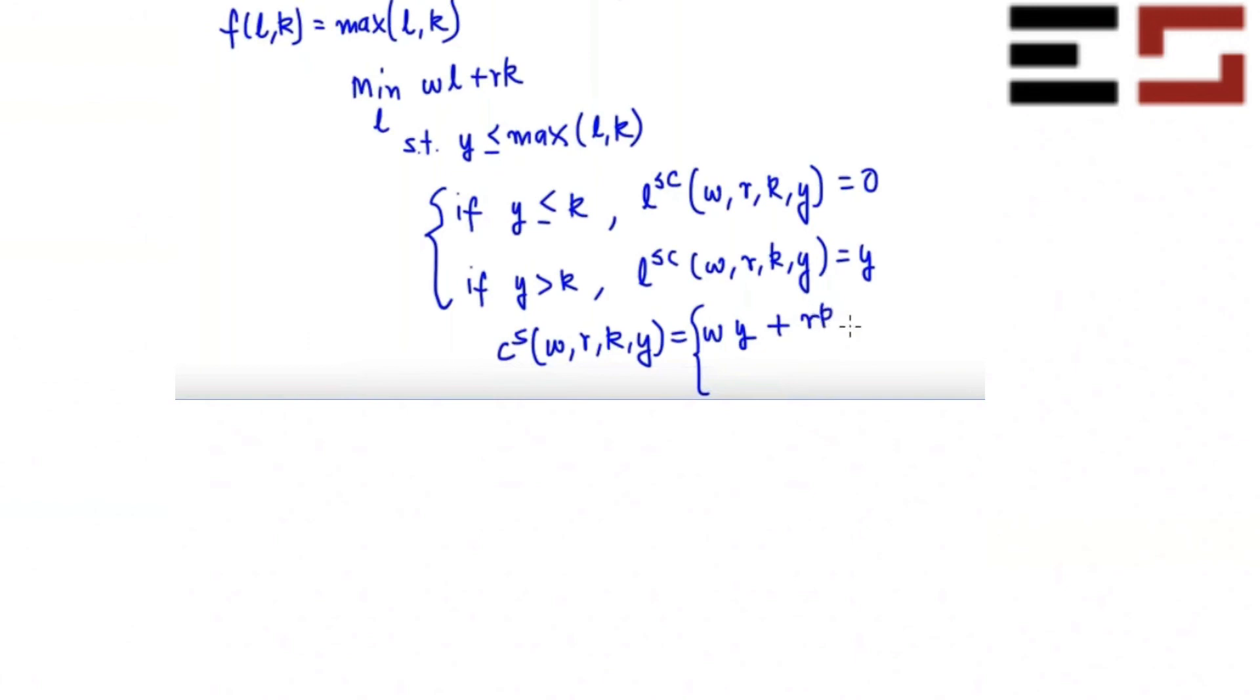C^s(w,r,K,y) is equal to what? Okay, so I can just split it into two cases. w times y plus rK if y is greater than K, and it is just rK if y is less than or equal to K.